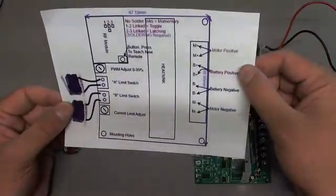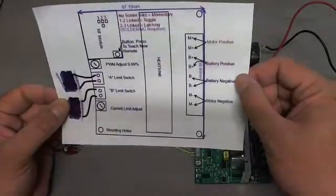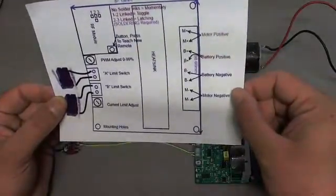First is motor positive, the next is battery positive, the next is battery negative, and the last is motor negative.